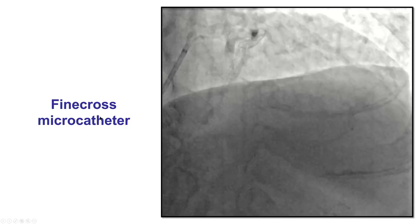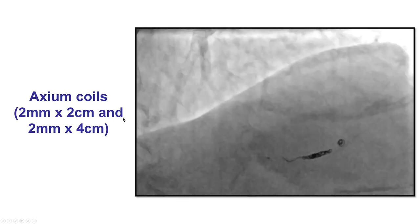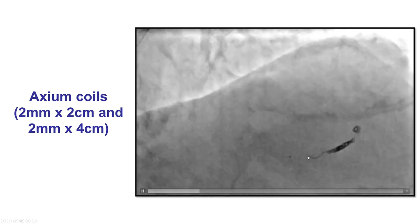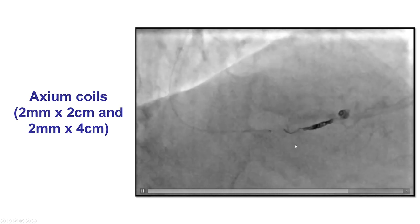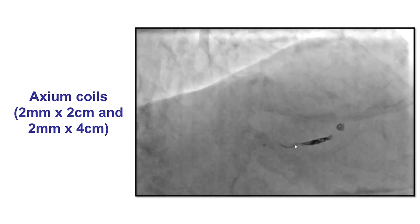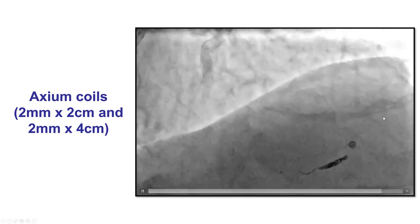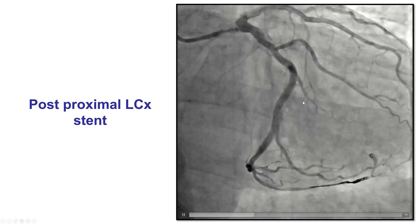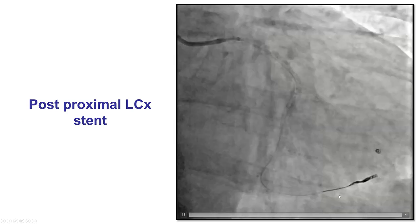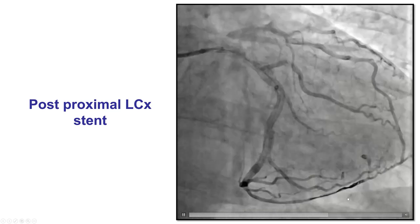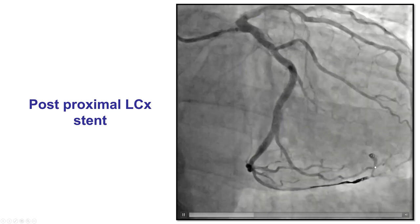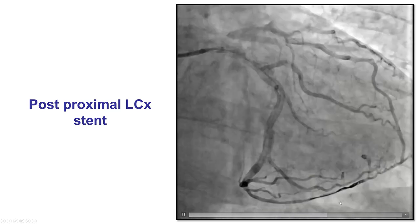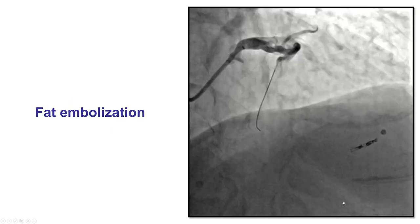We delivered a microcatheter — a Finecross — and then delivered two coils: a 2 mm by 2 cm and a 2 mm by 4 cm Axium coils. These are 0.014-inch compatible and can go through any standard microcatheter used for percutaneous coronary intervention. Unfortunately, we continued to have flow through the coils and into the area of perforation. The first coil was placed too distally inside the perforation area, and the most proximal coil was not optimally deployed. We debated what to do.